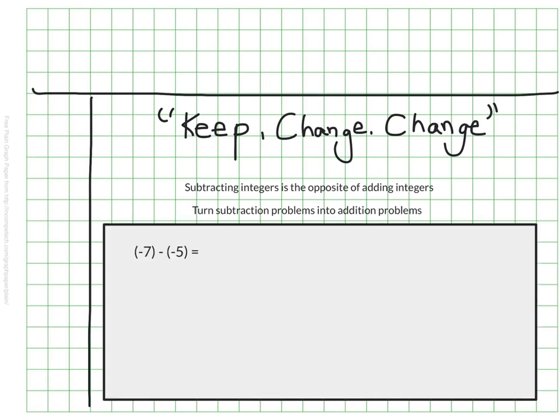So in keep, change, change, we always keep our first integer just as it is. If we have negative 7 minus negative 5, we'll still use negative 7. But then we change the operation to addition. So now this is negative 7 plus, that's our first change. And then we also change the second integer to the opposite. So now this becomes positive 5. So we have negative 7 plus 5. And from our work with addition, negative 7 plus 5 would be negative 2.